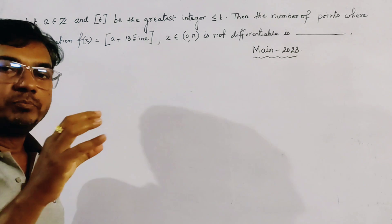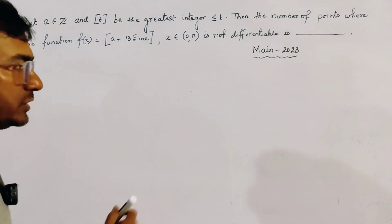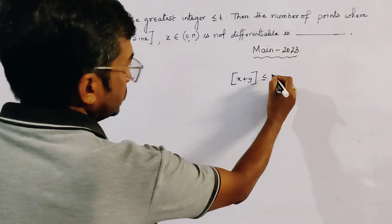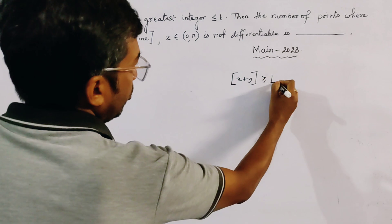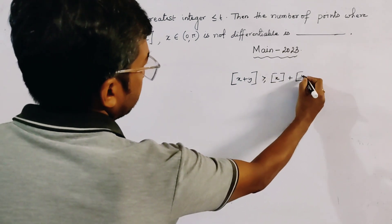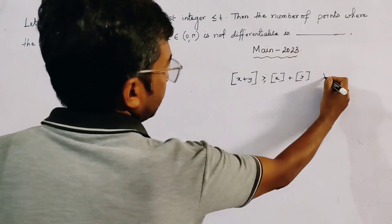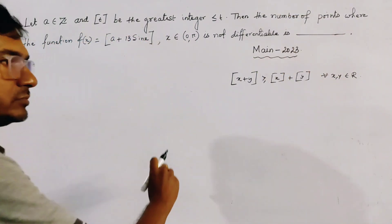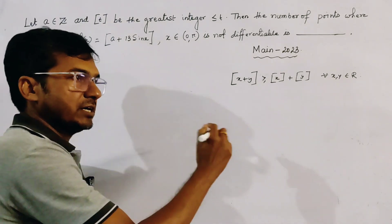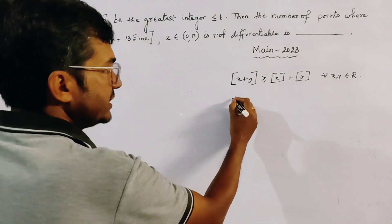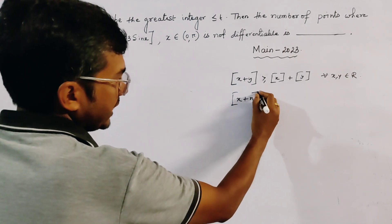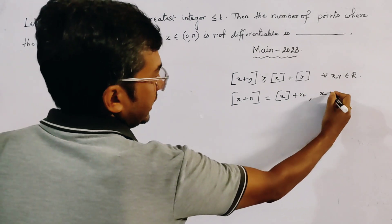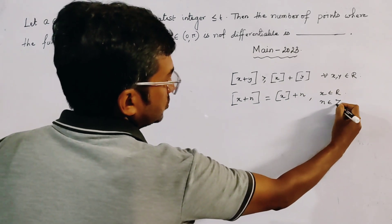Here we use two important properties of the floor function. The first property is: box(x + y) is greater than or equal to box(x) plus box(y), for x, y belonging to any real number. If one of them — x or y — is an integer, let y be integer n, then box(x + n) equals box(x) plus n, where x belongs to R but n belongs to Z.